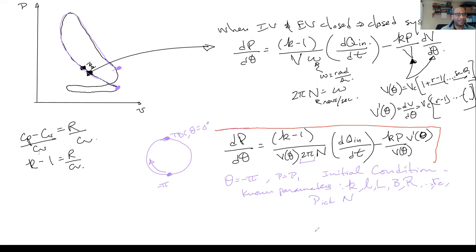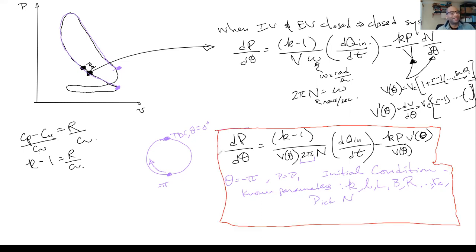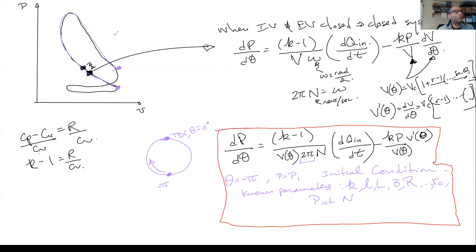That equation, circled in red with its initial condition, is the first law of thermodynamics written in differential form, using pressure as the dependent variable and theta as the unit of time — theta tracks how the process moves forward.